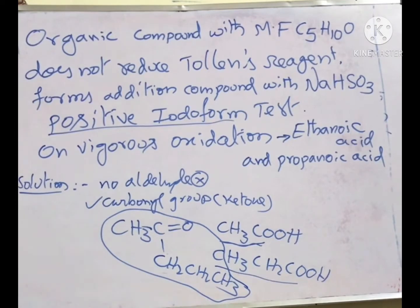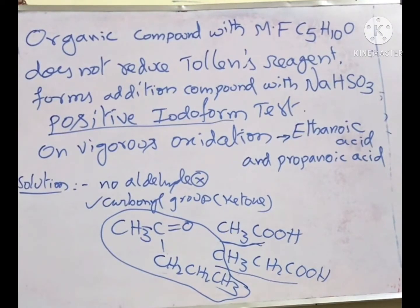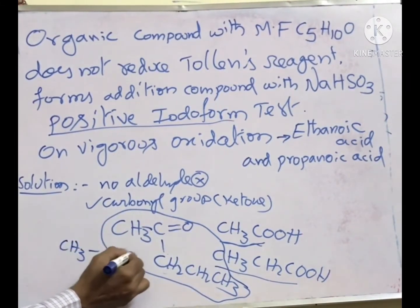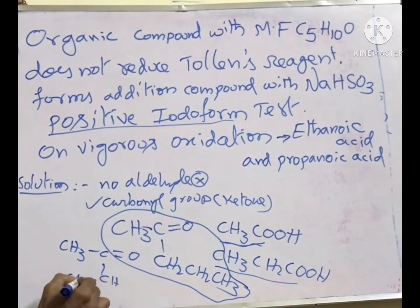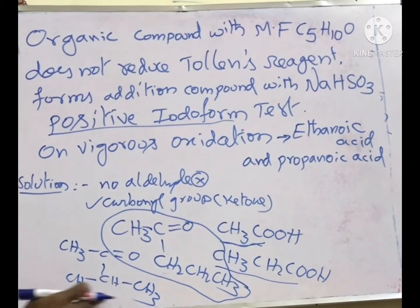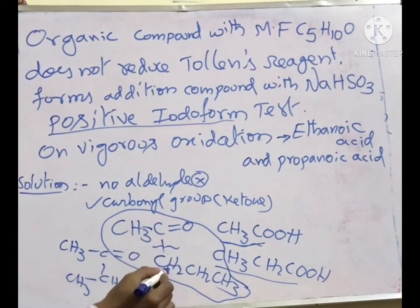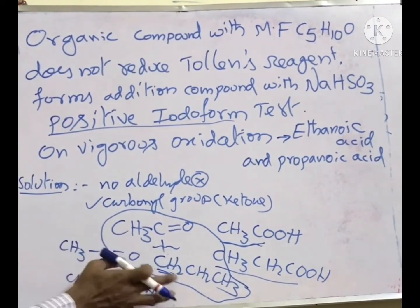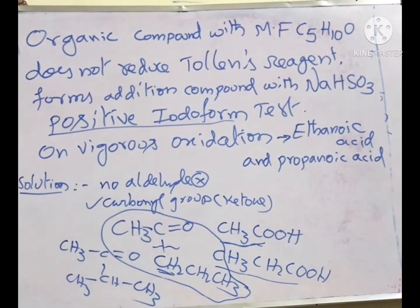So this is the compound. When I break here, this gives propanoic acid; this gives ethanoic acid. Using this we can identify the particular compound. Here it was given just for three marks, so you need to explain like this and write the compound — that is sufficient. They have not asked for reactions. You can write CH3CO with a normal propyl group. So the answer is methyl propyl ketone.